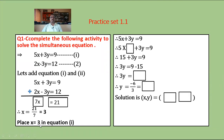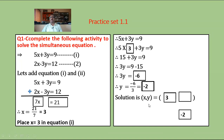Substitute x equals 3 in equation 1: 5 times 3 plus 3y equals 9. So 15 plus 3y equals 9. Moving 15 to the RHS: 3y equals 9 minus 15 equals minus 6. Dividing both sides by 3: y equals minus 6 upon 3 equals minus 2. The solution of the given simultaneous equation is x equals 3 and y equals minus 2.